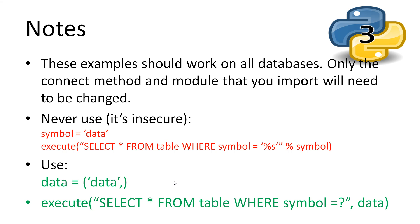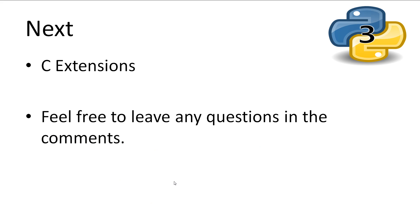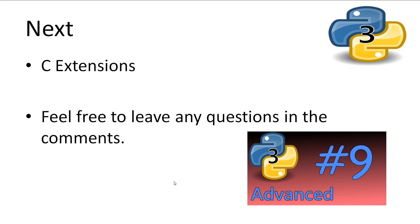Some notes to keep in mind: most databases have their own module, however this code should work on all of them — only the connect method might change. When executing statements, avoid using the percentage operator for inserting variables into your strings as it can be abused. Rather, just put the string into a single tuple and use the optional parameters for parameterized queries. I hope you now have an understanding of how to talk to databases using Python. Feel free to leave any questions in the comments and I'll do my best to answer them. Next we're going to cover C extensions — don't forget to subscribe, thanks for watching.